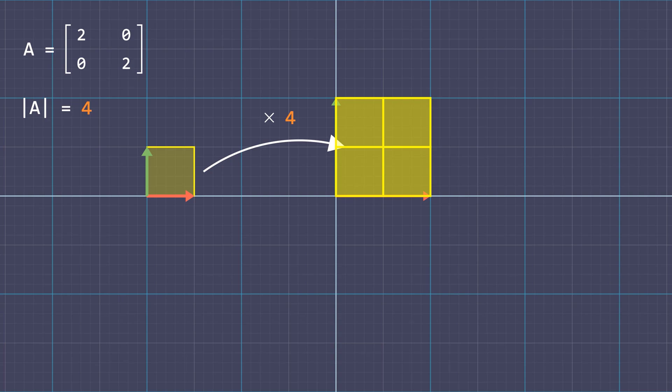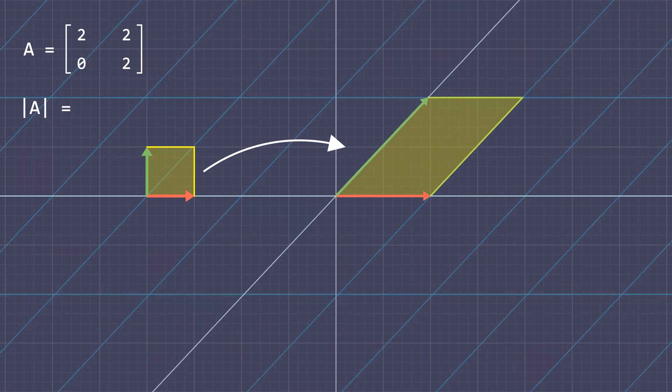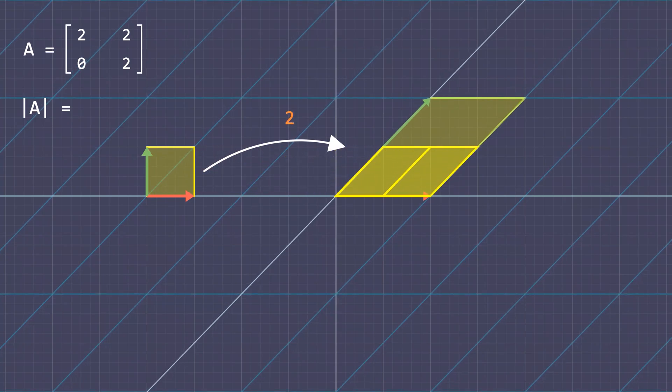Here is another example. Notice this transformation matrix has an effect of shear stress in the x-direction and scales the area four times. Therefore the determinant of the matrix A is 4.